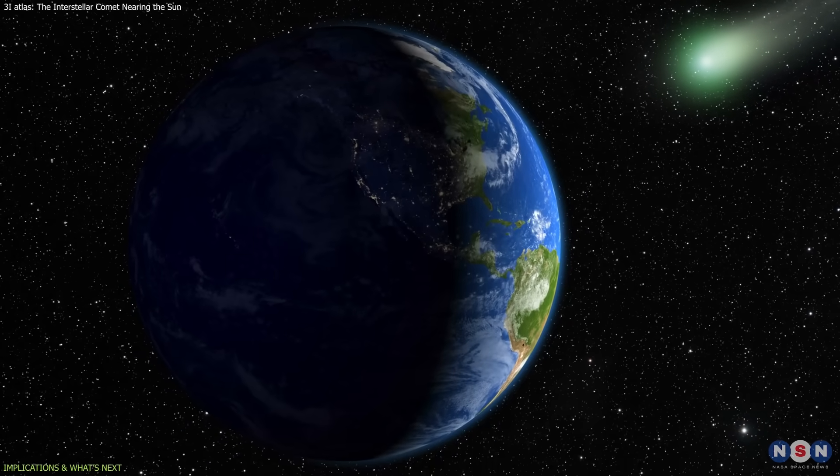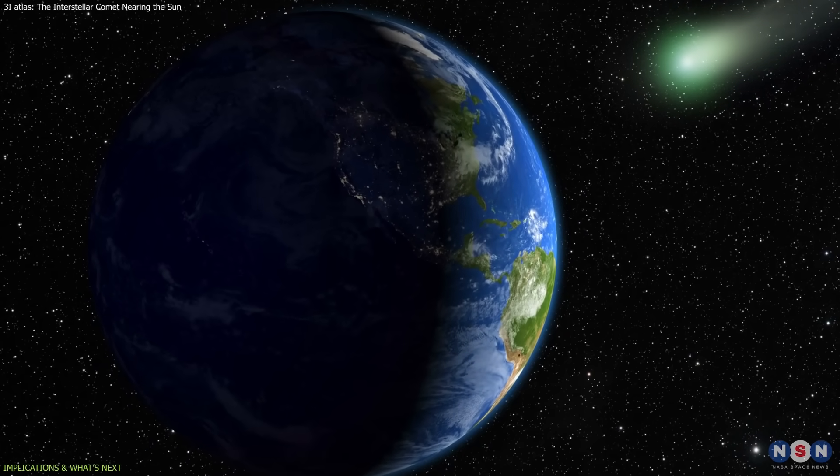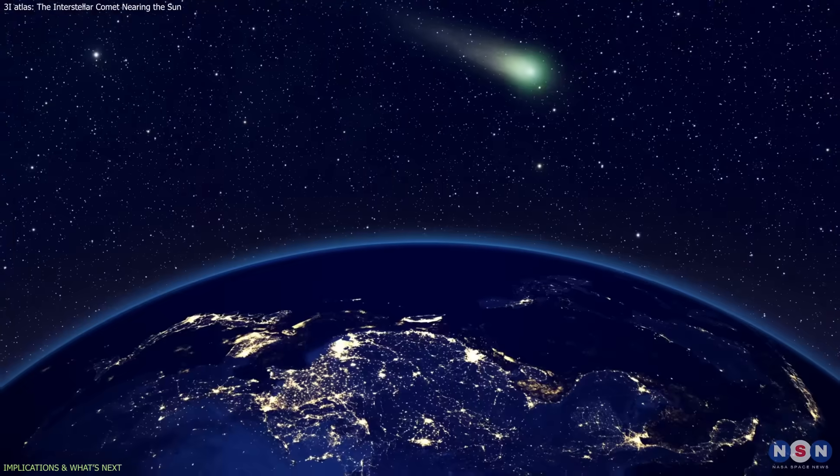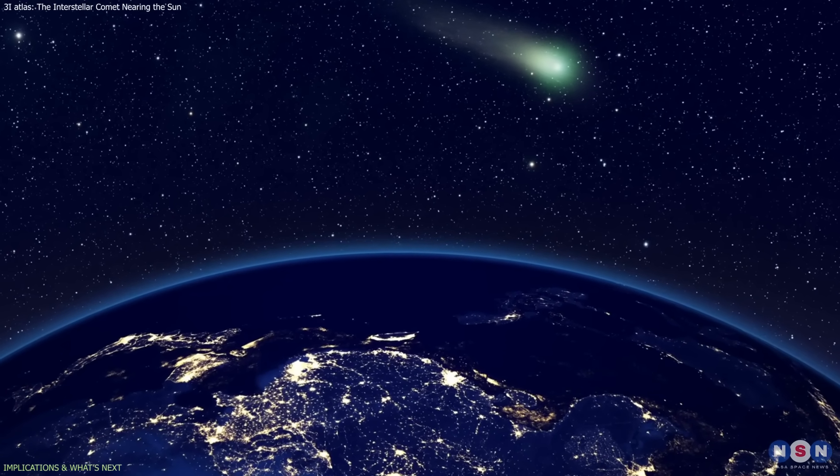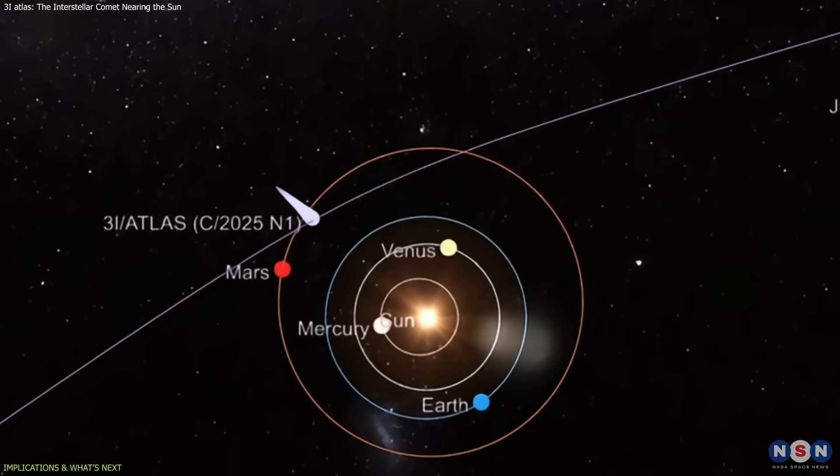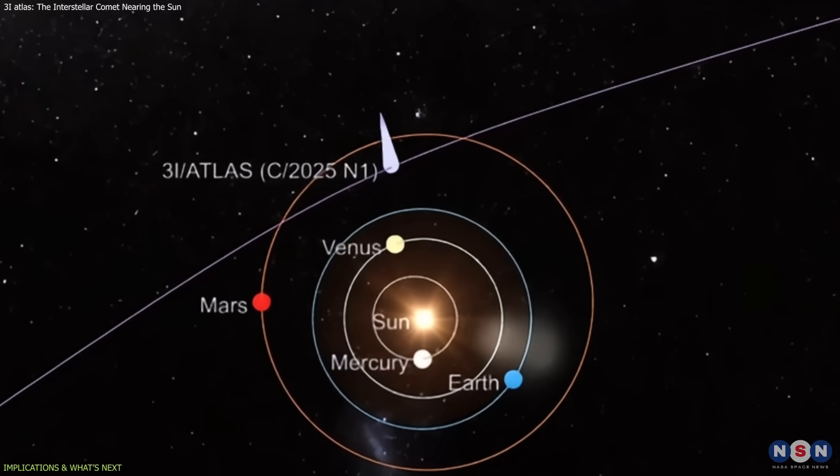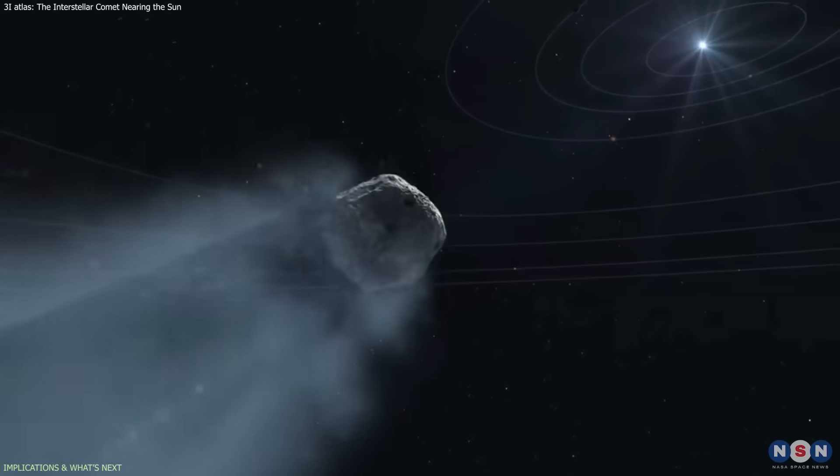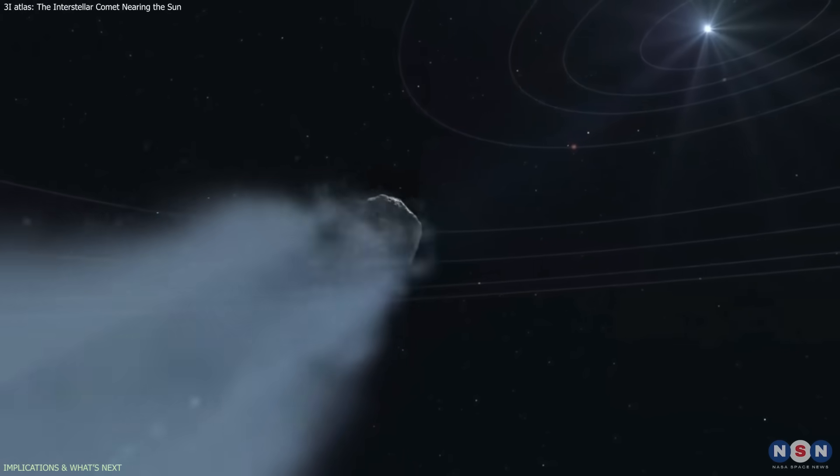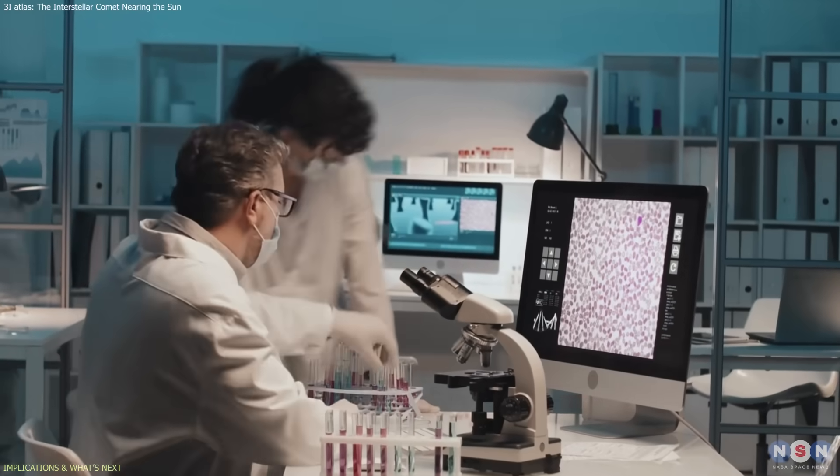If the comet survives, it will become visible again from Earth in early December, passing at a safe distance of around 270 million kilometers. By comparing its pre- and post-perihelion spectra, scientists can learn how solar heating alters interstellar material, data that no laboratory can replicate.